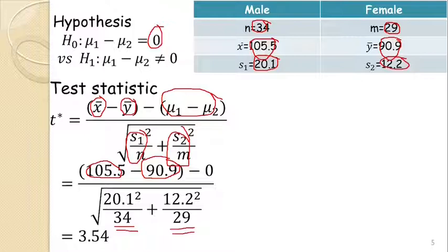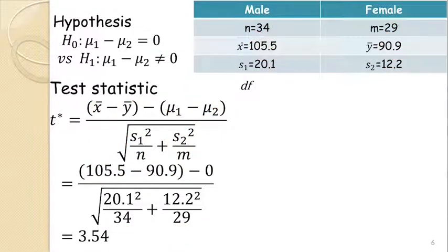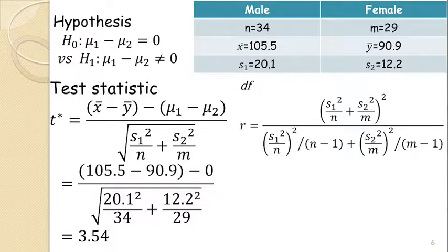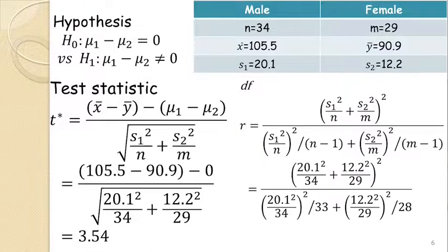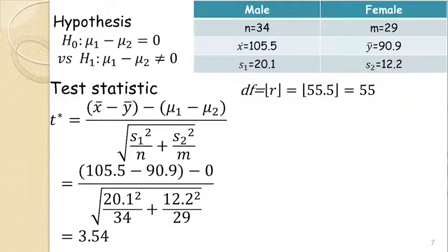The test statistic under the null hypothesis has been computed. Now we compute the degrees of freedom R. Since the two variances are unequal, we use the Welch–Satterthwaite formula. Substituting s₁, s₂, n, and m from the table and simplifying, R = 55.5. Since degrees of freedom must be an integer, we take the integer part, which is 55.